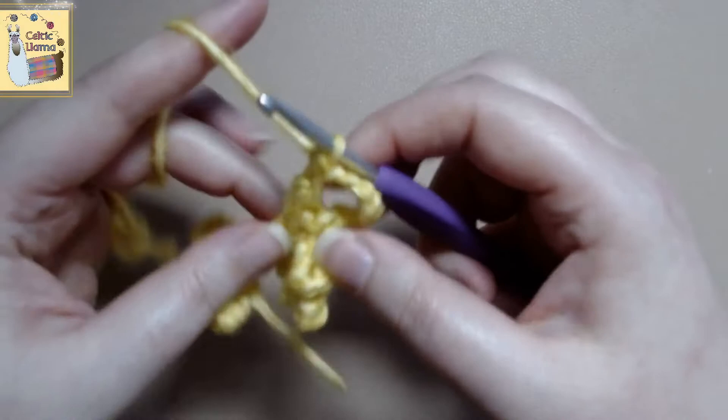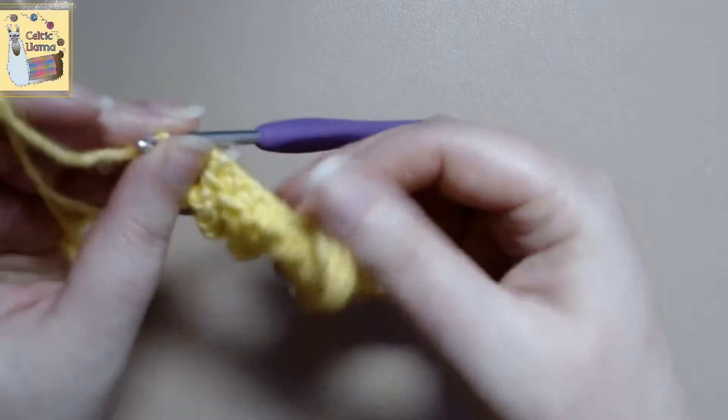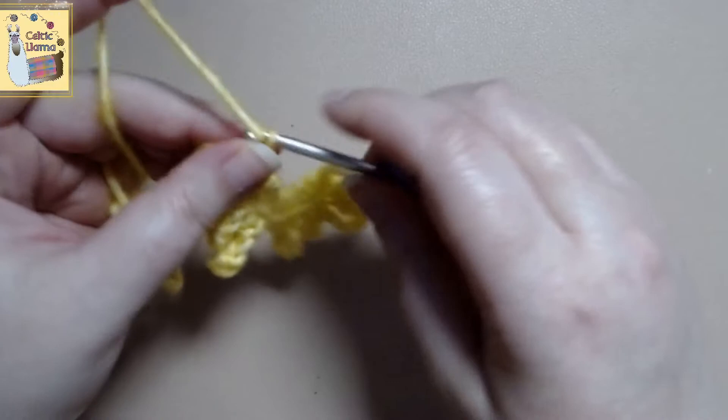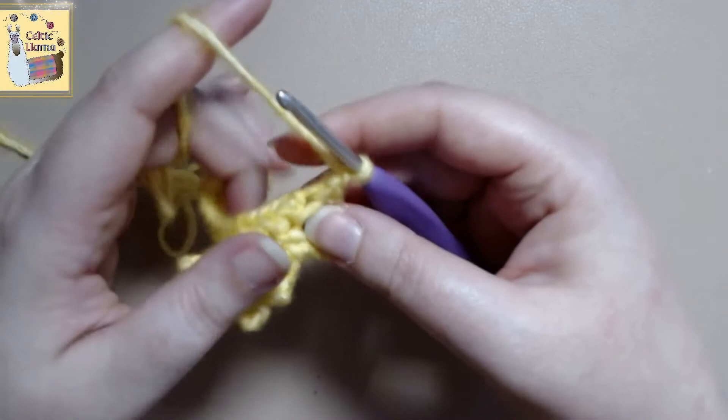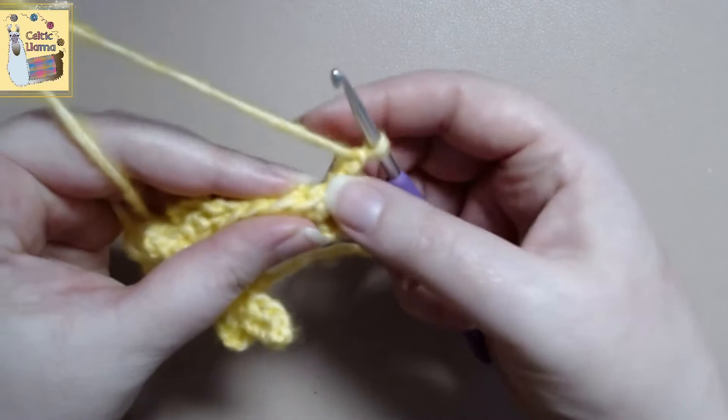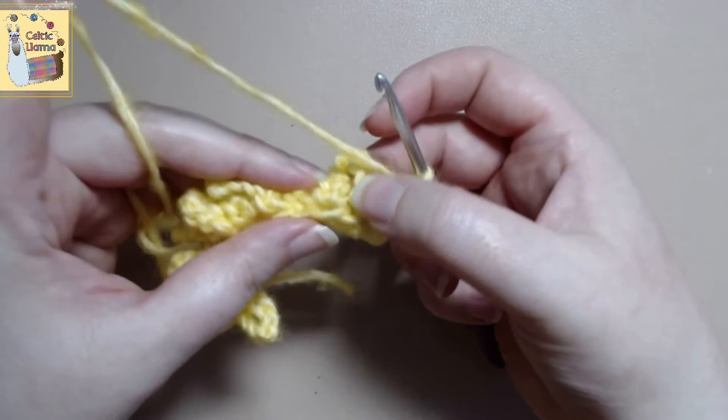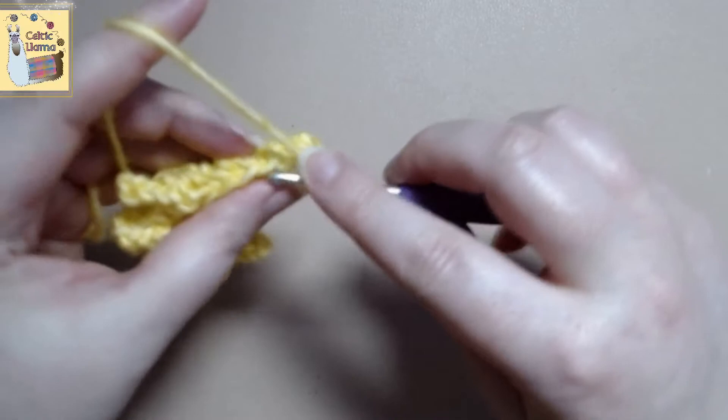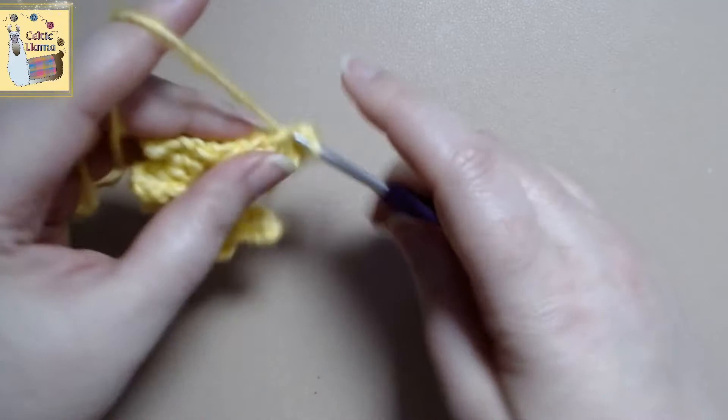So since we're doing this into a row, and see how that kind of turned out, we will chain one and turn our work. If you were doing this in the round you would just do a slip stitch and chain one. And then what we want to do is this back loop right here. So we were doing the chain and single crochet in the front loop. Now we're going to do a single crochet all the way across in the back loops.